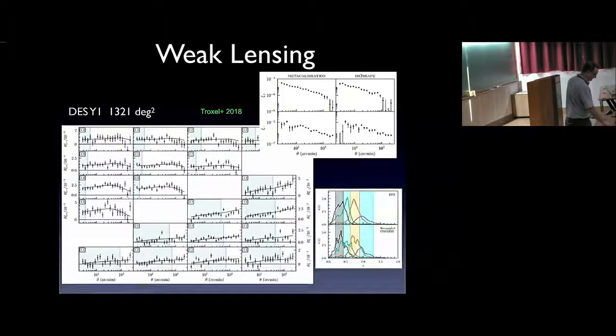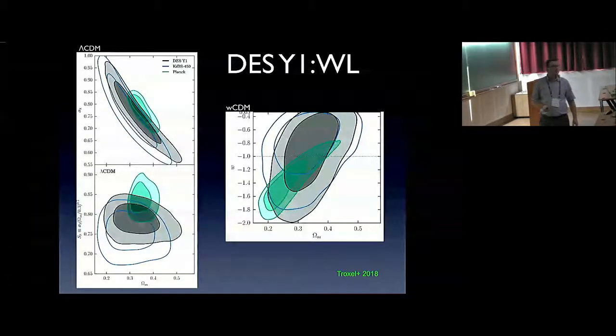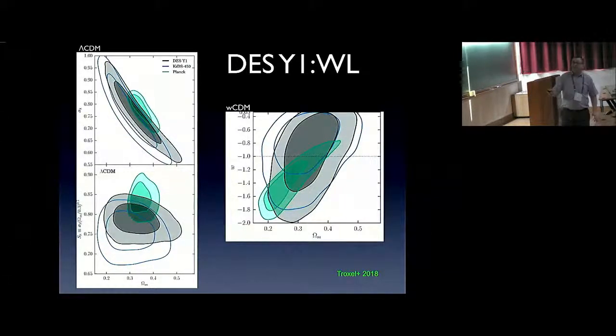This is what was done here. This is the constraint using the year one data using weak lensing information only. We can constrain various parameters. But the parameters we're the most sensitive to is this combination of sigma-8 and omega matter. Omega matter is the matter density in units of critical density. Sigma-8 is the amplitude of the density fluctuations on 8 megaparsec scale. This gives us a measure of the amplitude of the mass fluctuations, which is what lensing is measuring.